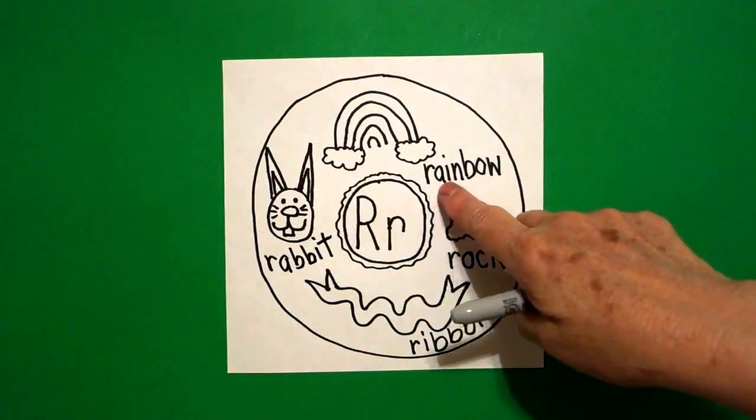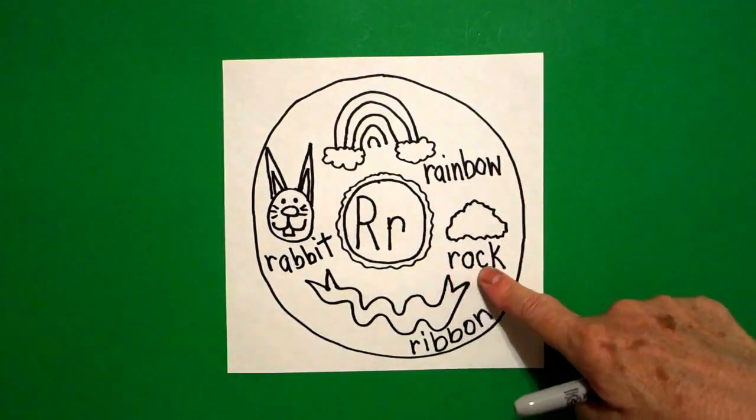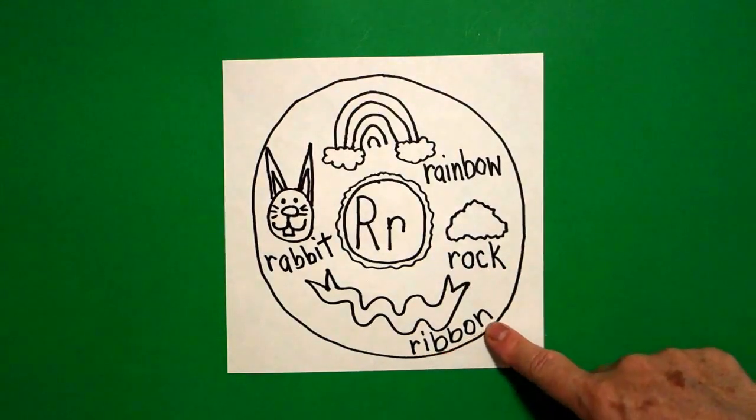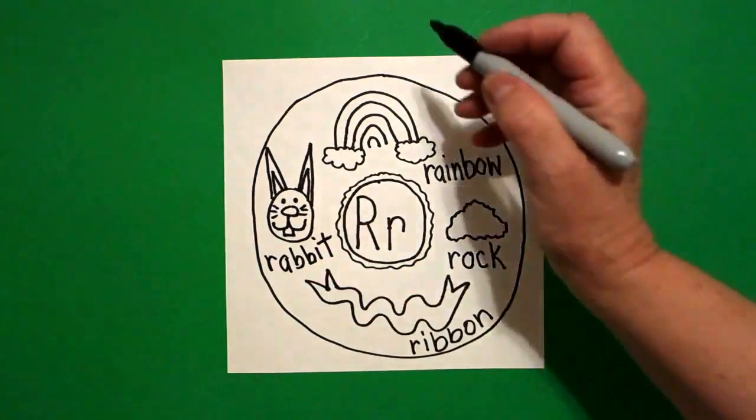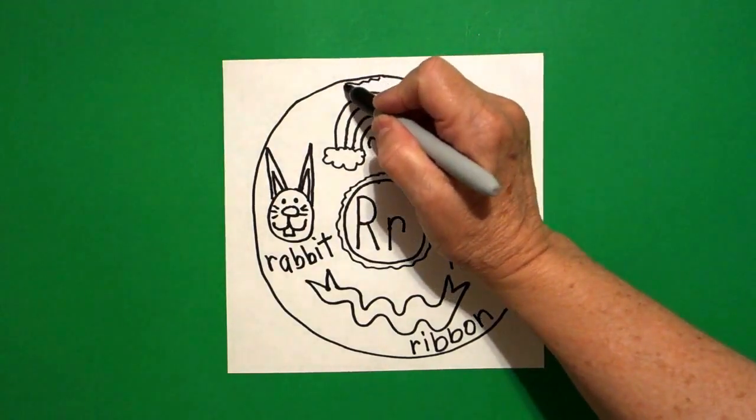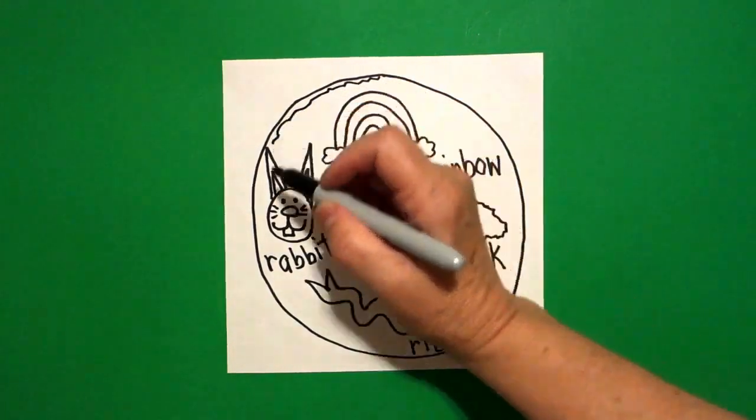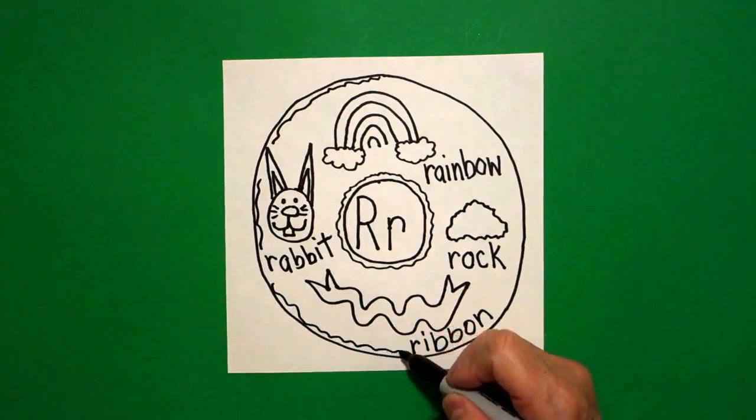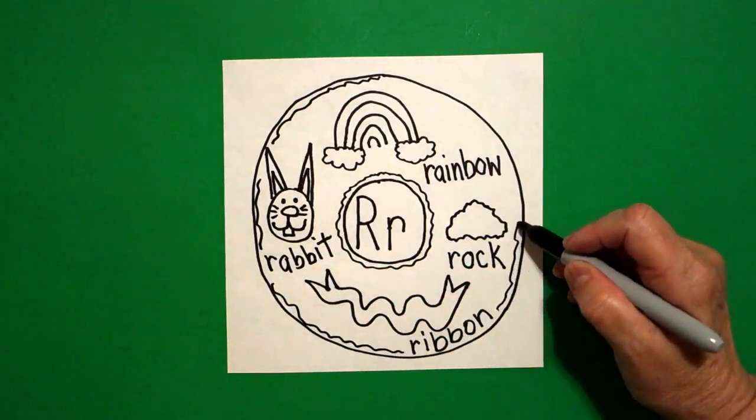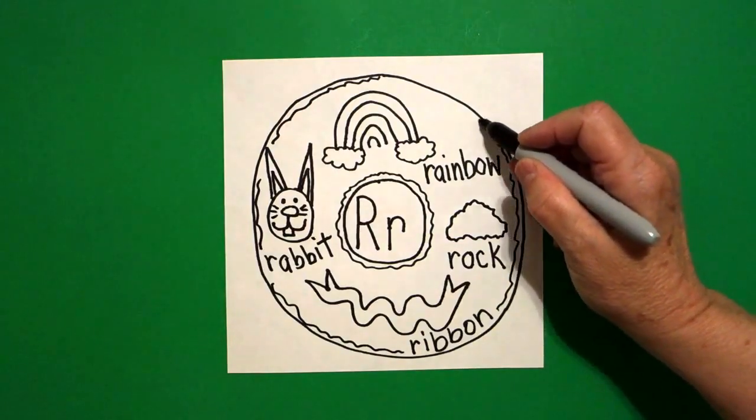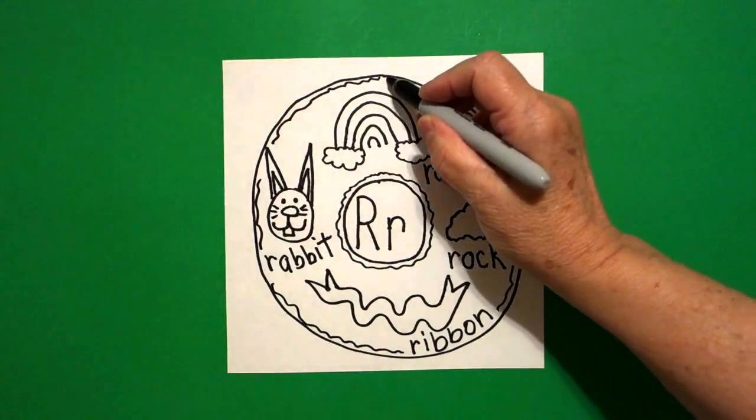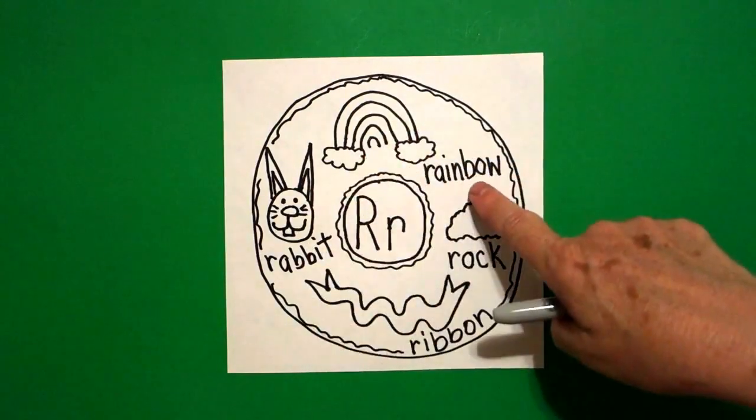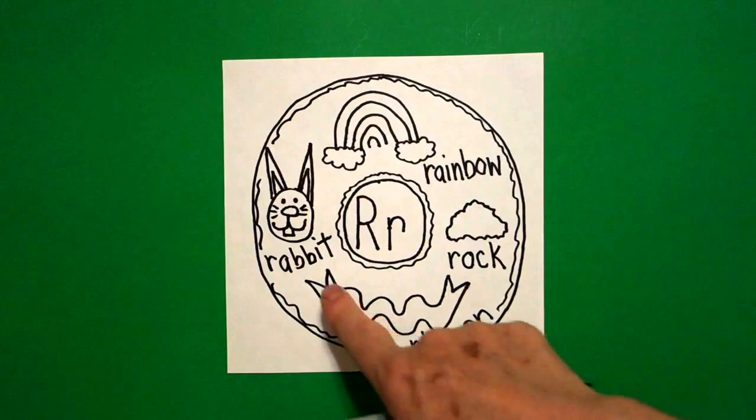And this is a rabbit. R-A-B-B-I-T. So we have a rainbow, rock, ribbon, rabbit. Come up to the top and let's add our wavy, wavy line, jump over, don't draw through your pictures, don't draw through your words, all the way around. This is a skinny mini line that will make our donut be the cake part of our donut.